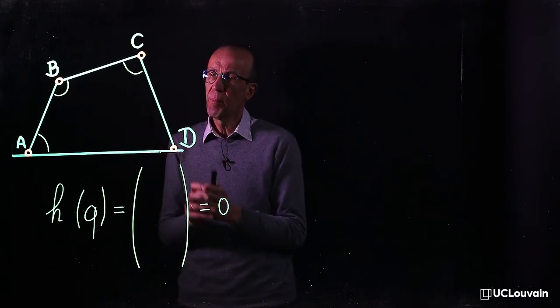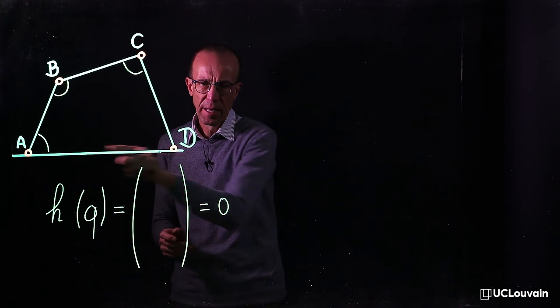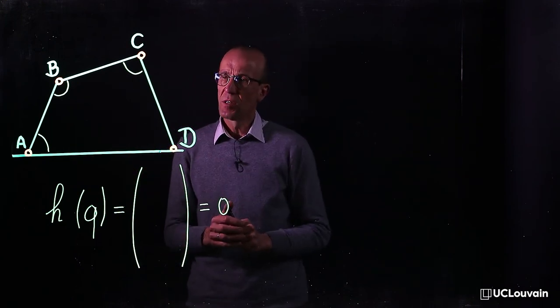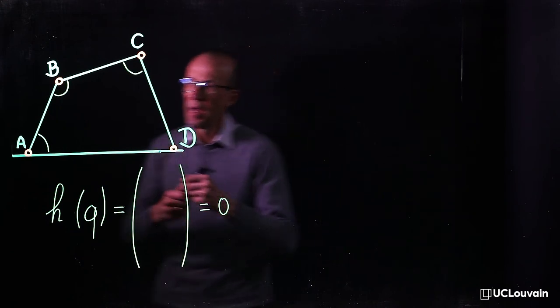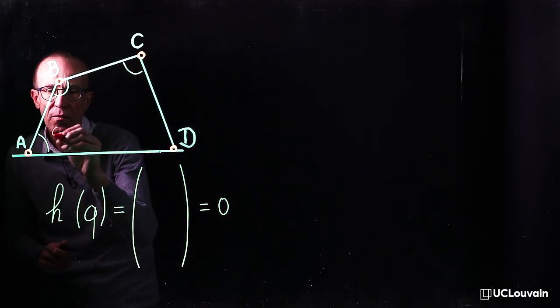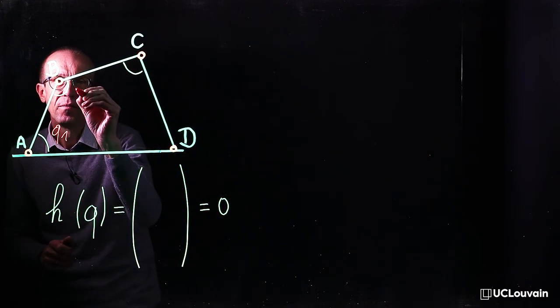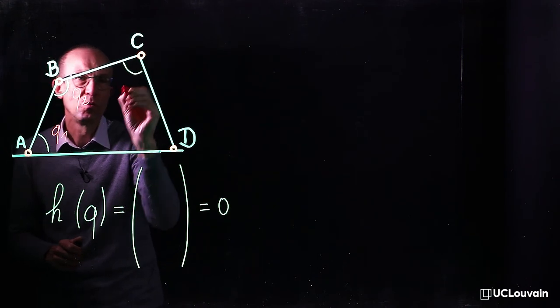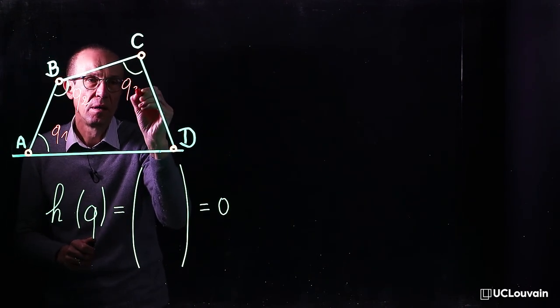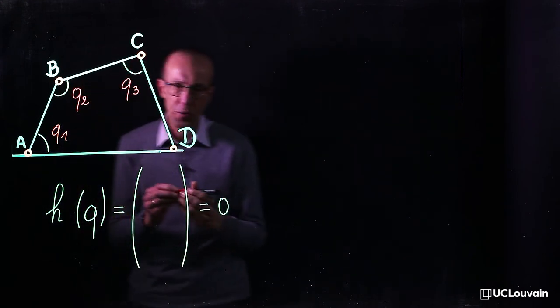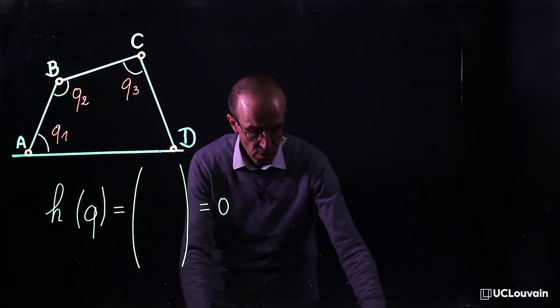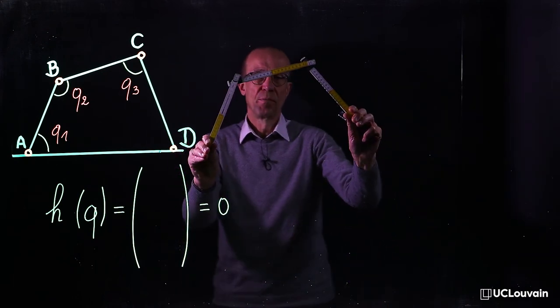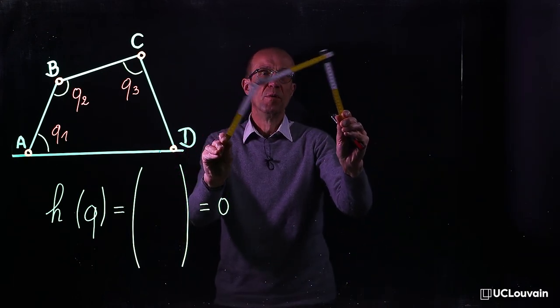Let's take the example of the four-bar mechanism in which the generalized coordinates can be chosen as the relative angles q1, q2, and q3. Since this mechanism only possesses one degree of freedom of motion,